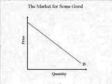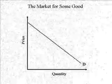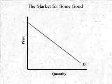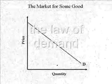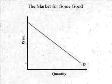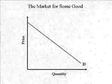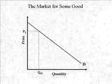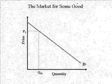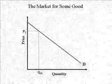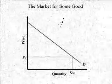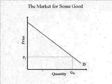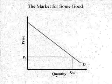Economists typically represent the relationship between the price of a good and the quantity demanded of a good with the demand curve that is downward sloping to the right. This curve reflects what economists call the law of demand. The law of demand predicts an inverse relationship between the price and the quantity demanded of a good, such that at relatively high price points — such as P1 — the quantity demanded would be relatively low, represented here as QD1. At lower price points such as P2, quantity demanded is relatively high, as indicated by point QD2.